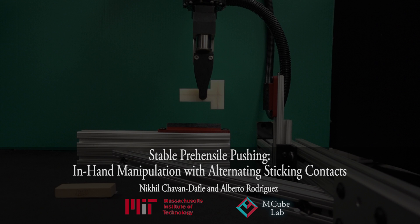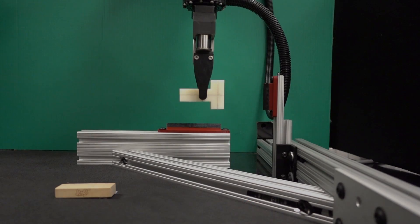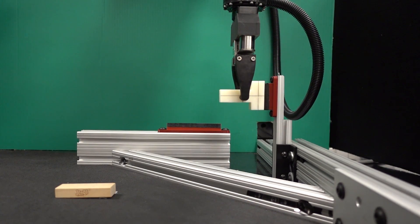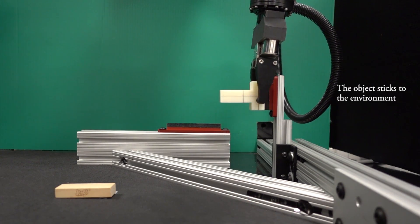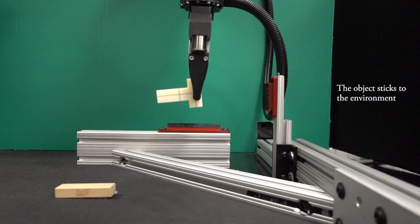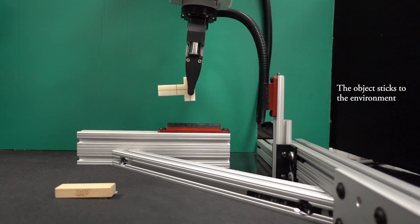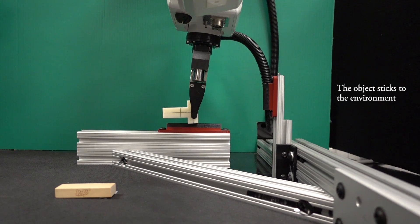We are enabling robots to do in-hand manipulations. The object in hand is regrasped by pushing it against the environment, particularly using the pushes during which the object sticks to the environment. We call this stable prehensile pushing.